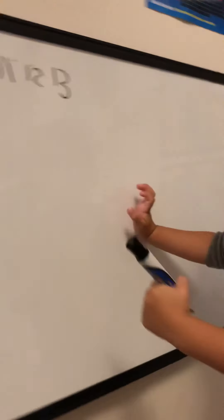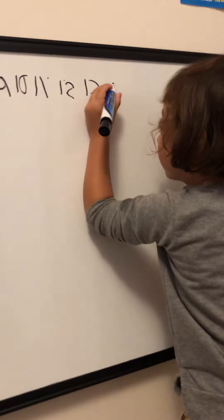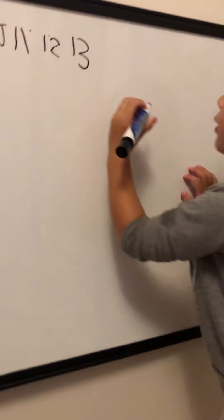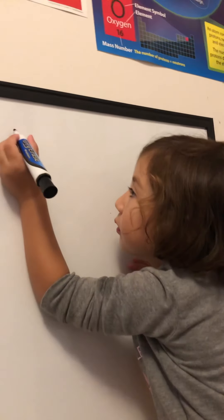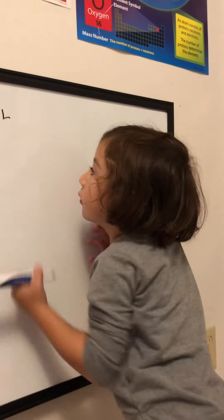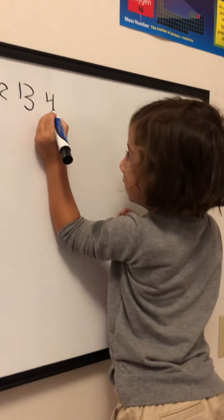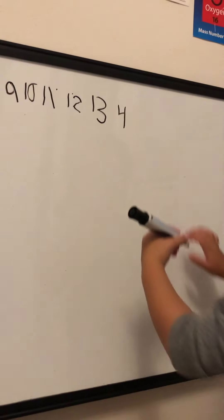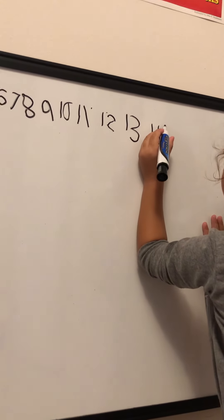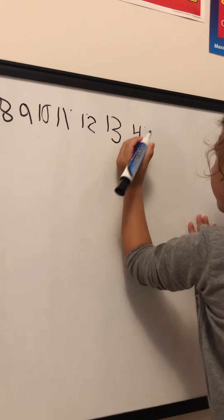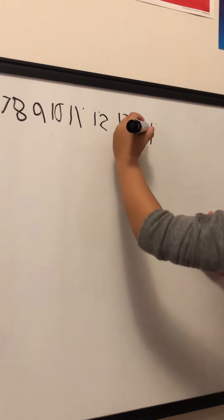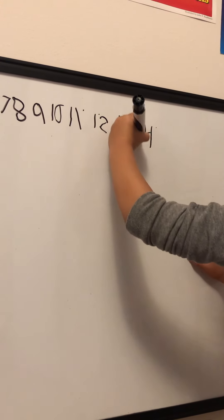What's next? Thirteen, fourteen. Fourteen, fourteen. Very good. One, four. Yes. Where's your one? You said it's one, four. You missed the one. Where's to put the one? In the front or in the back? Five. Yes. Great job.